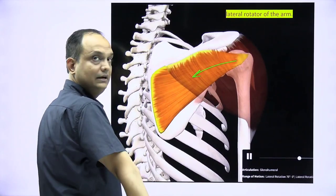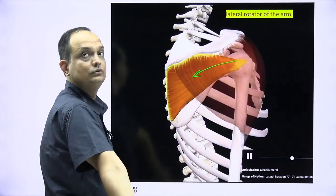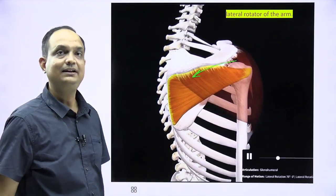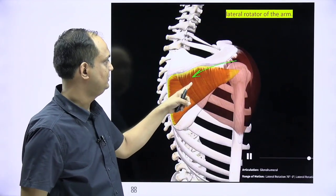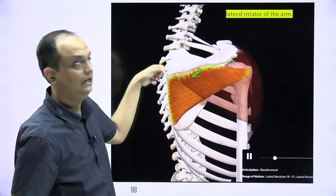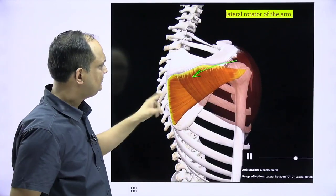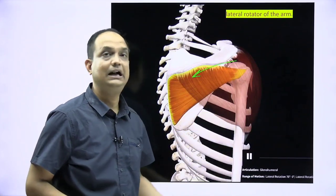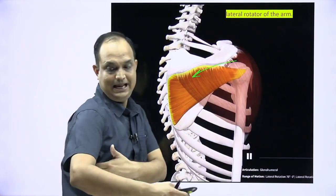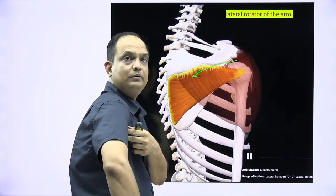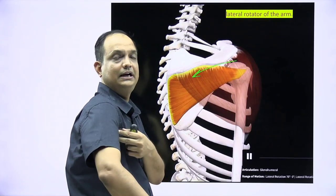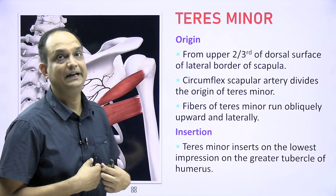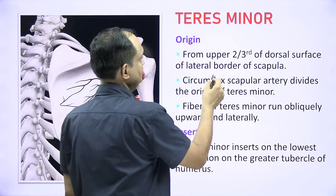The action of infraspinatus: when it contracts it pulls the humerus outward, causing lateral rotation at the shoulder joint. This lateral rotation is also associated with the posterior fibers of deltoid. The concept: any muscle passing anteriorly to the joint causes medial rotation; any muscle passing posteriorly causes lateral rotation.